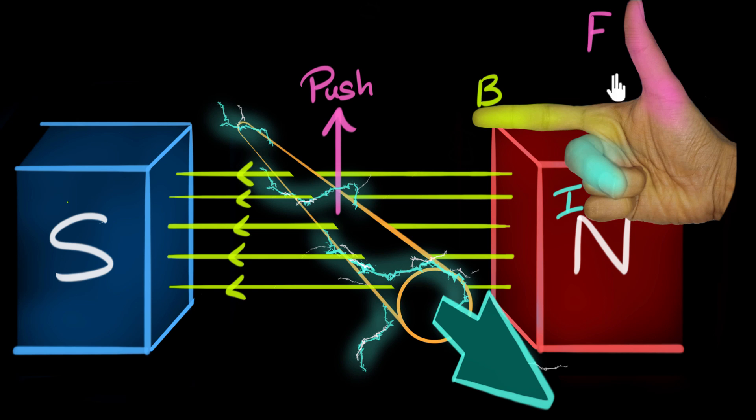Then the thumb represents the direction in which you are pushing the wire, so F for force. The forefinger will tell us in what direction the magnetic field is, and the symbol for magnetic field is B. Then the middle finger gives us the direction of the current.